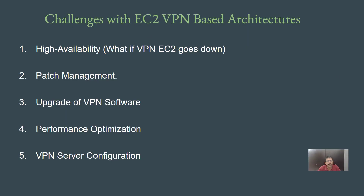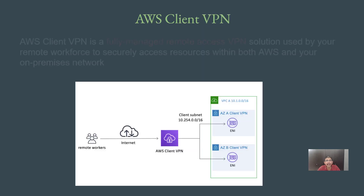These are some of the challenges associated with an EC2-based VPN architecture. Generally in organizations, there will not be a separate team for VPN — it could be the networking team, the DevOps team, or the security team. In the organization I worked with, our security team of just two people used to manage the VPN alongside primary tasks like hardening, vulnerability management, and patch management. To overcome all of these challenges, AWS has introduced a service called Client VPN.